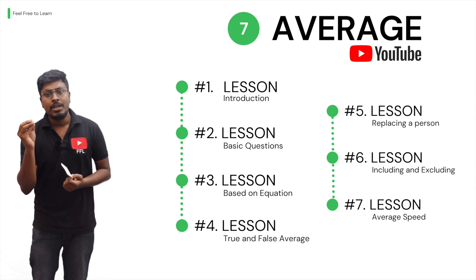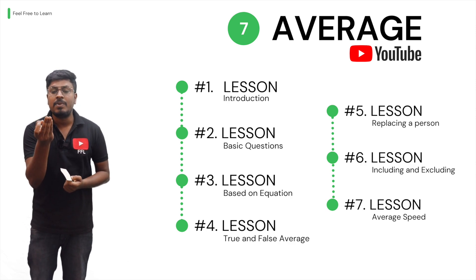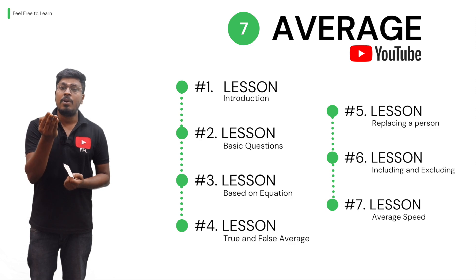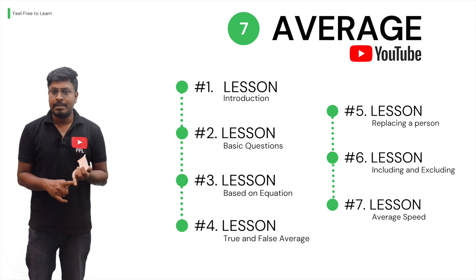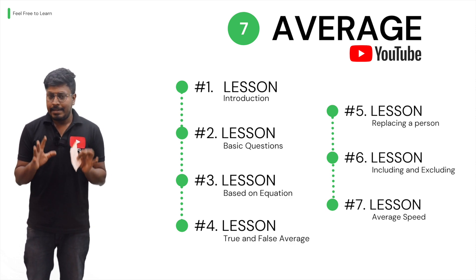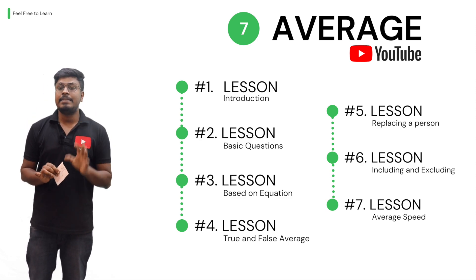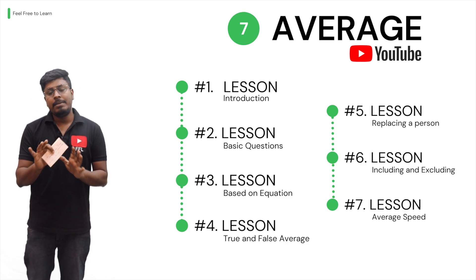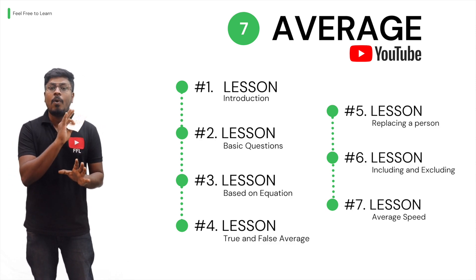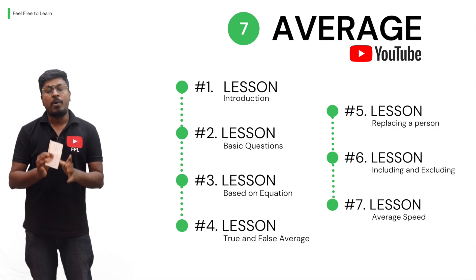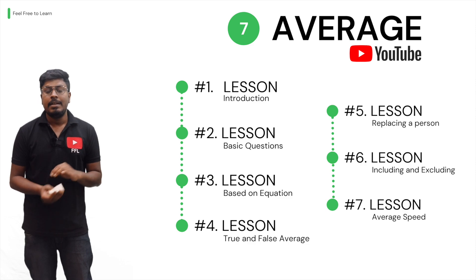The second video has 12 to 15 basic level questions solved. Then we have solved questions based on equations, questions based on true or false values, including and excluding and replacing a person, and average speed. In total, for the topic Averages I have posted seven lessons — the first three are basics and the remaining four are medium to hard level questions.